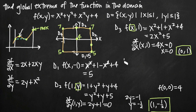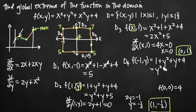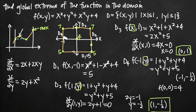For d sub 4, x is always equal to negative 1. So f(-1, y) gives 1 plus y squared plus y plus 4, which simplifies to y squared plus y plus 5 — the same equation as d sub 2. Taking the partial derivative with respect to y gives 2y plus 1. Setting that equal to zero gives y equals negative one-half. Since x equals negative 1 all along this line segment, the critical point for d sub 4 is at (-1, -1/2).